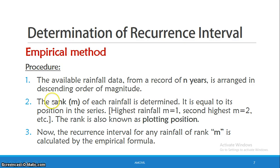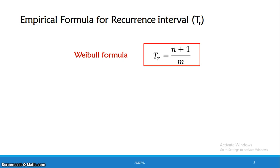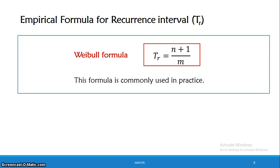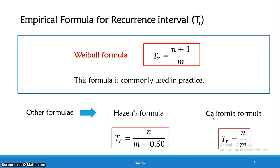Then we denote the rank. The rank is the plotting position. We have an empirical formula to calculate the recurrence interval. The common Weibull formula is: T_r equals n plus 1 divided by m, where n is the number of years and m is the rank. The Heisen formula is T_r equals n divided by m minus 0.5. Also, the California formula is T_r equals n divided by m. Now, we calculate the recurrence interval. Thank you.